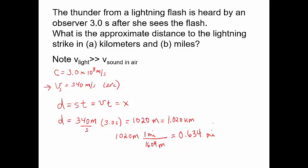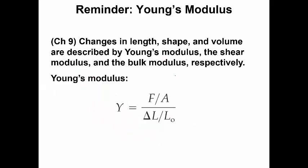Light travels at 3.40 × 10² m/s — wait, that's sound. Light is literally 10⁶ times faster than sound. So we don't have to worry about the travel time of light at all — it's essentially instantaneous.